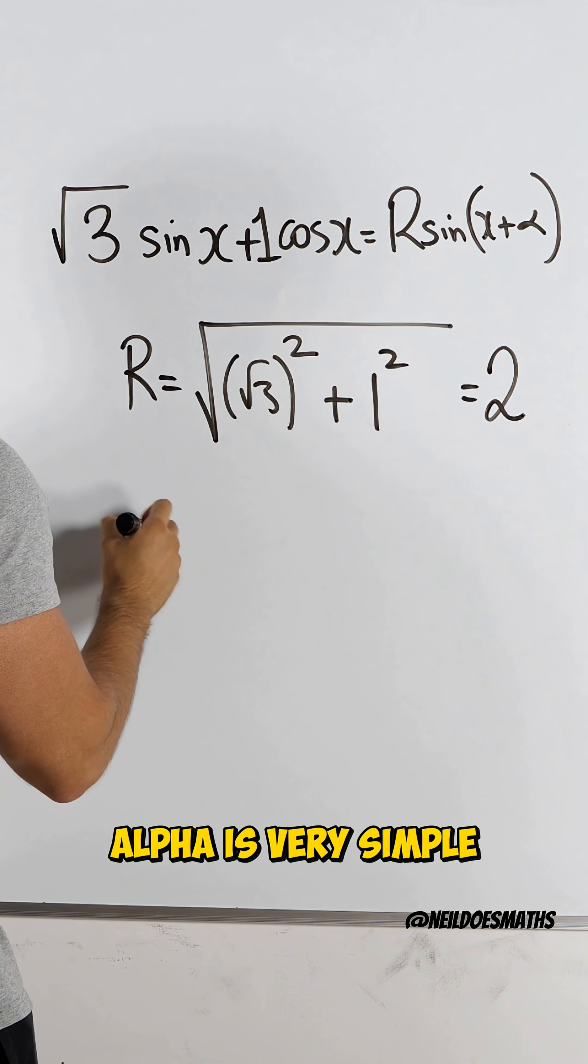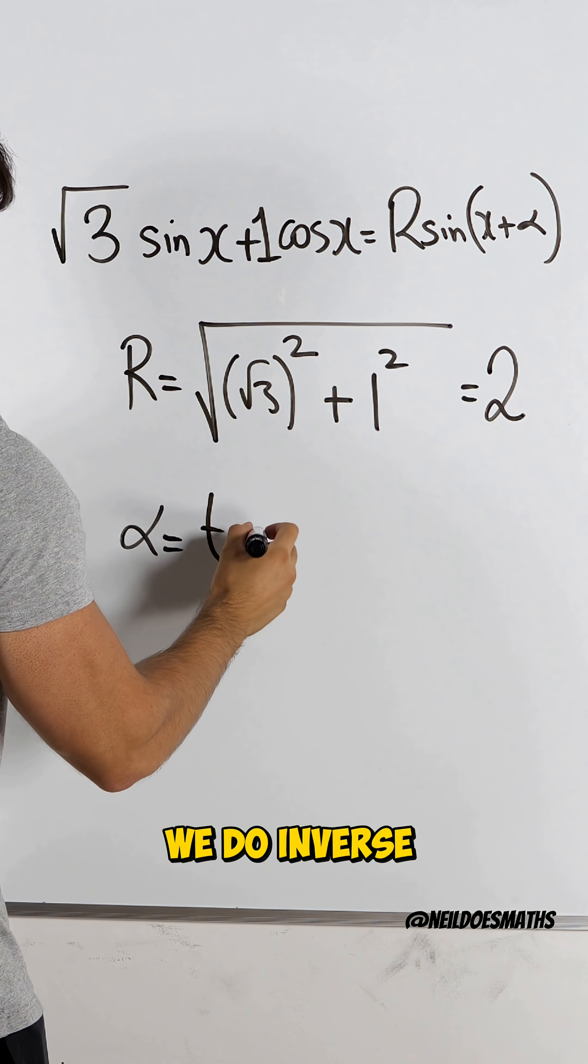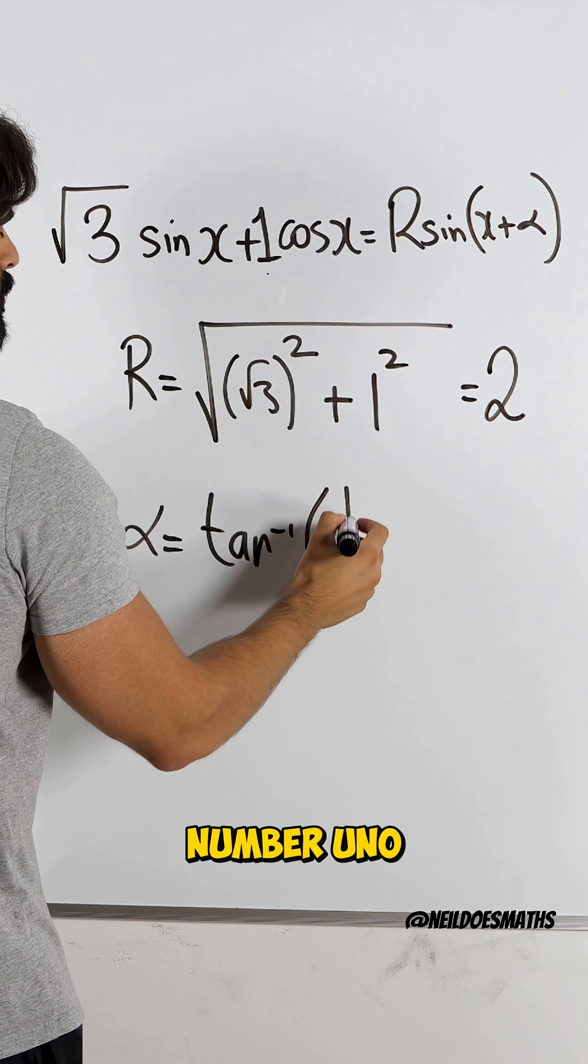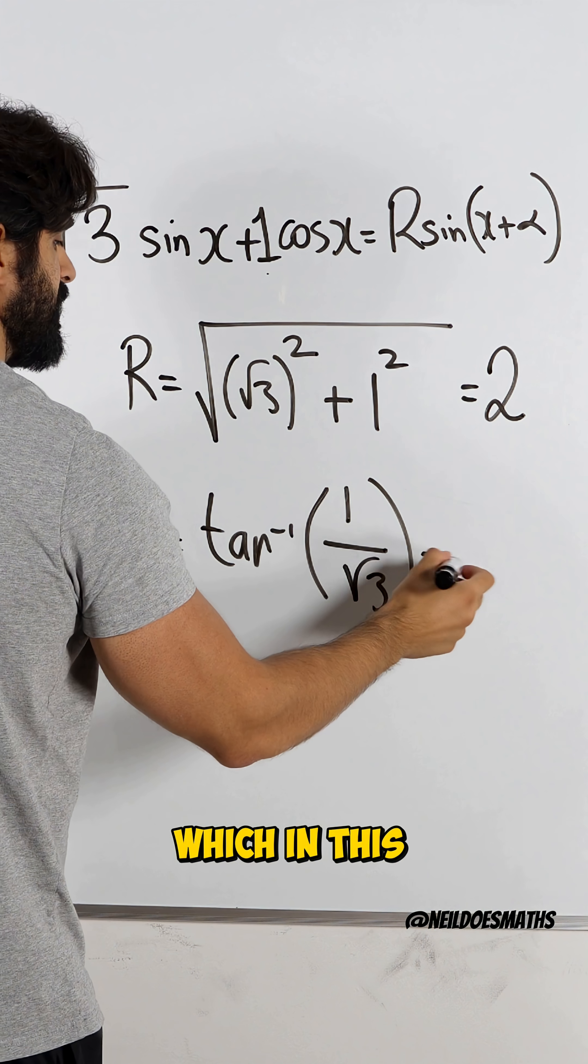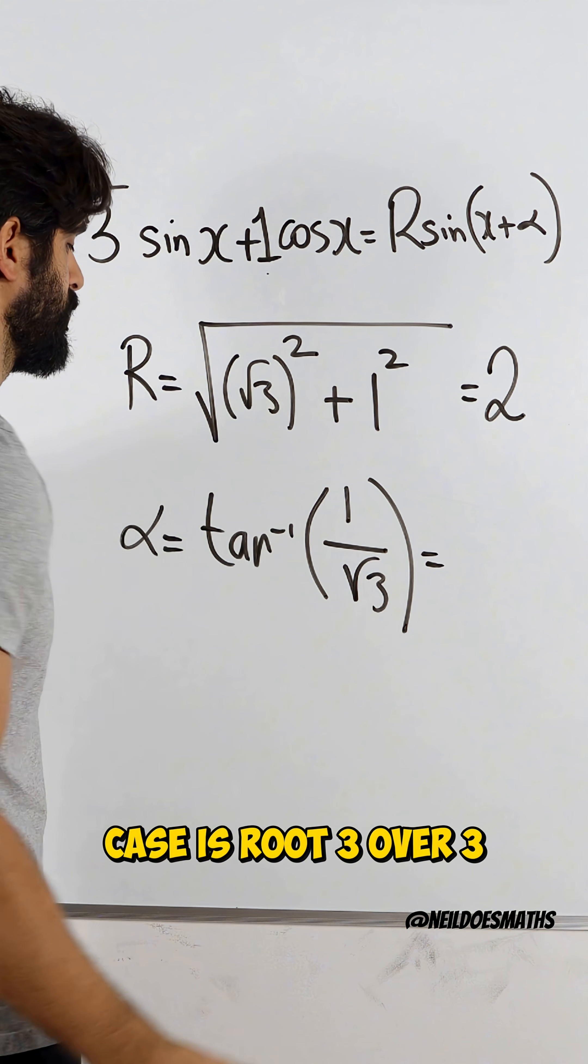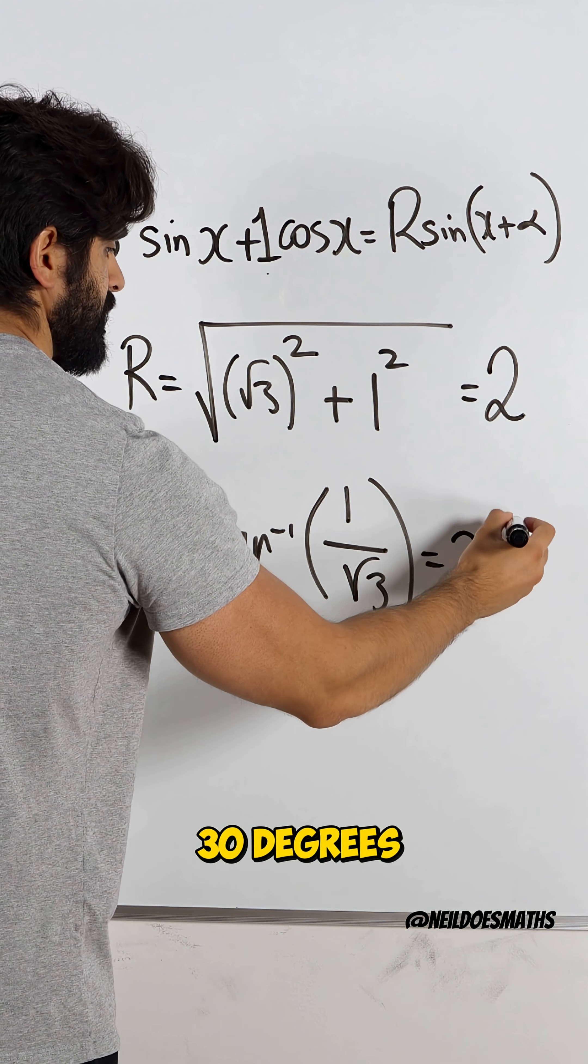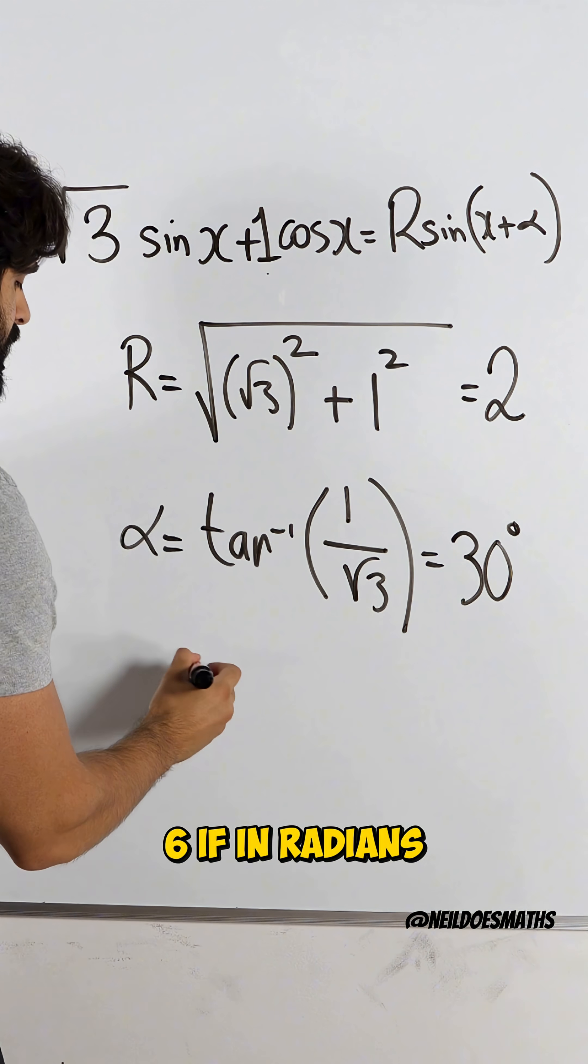Then to find alpha is very simple. We do inverse tan of the second number, uno, divided by the first number, root three, which in this case is root three over three. Inverse tan of that is 30 degrees or pi over six if we're in radians, and that's it.